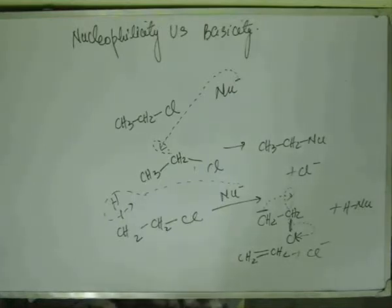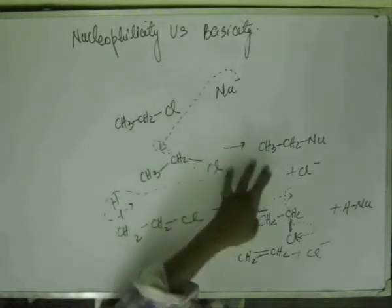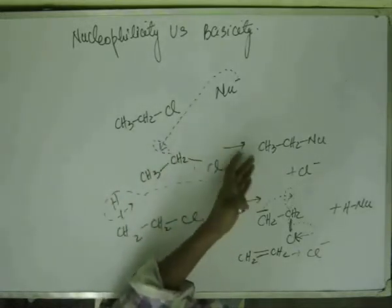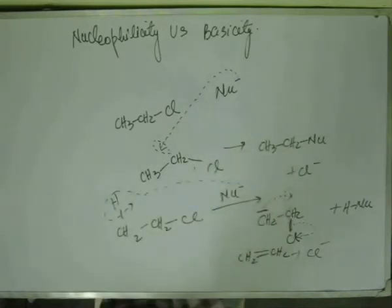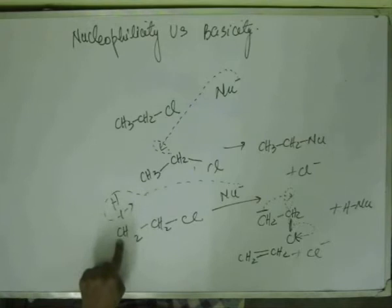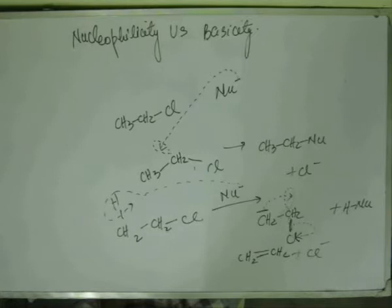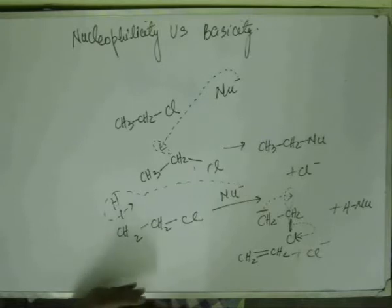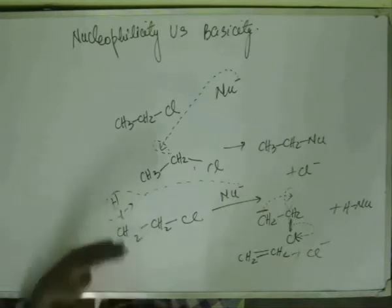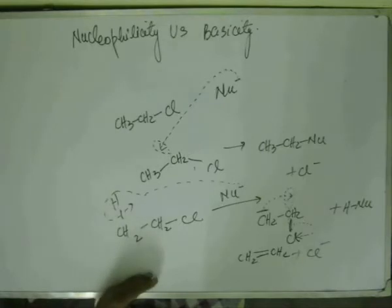There are various things that we have to talk about here. The first thing is the product of elimination is an unsaturated hydrocarbon — an alkene. The product of a substitution reaction was a normal alkyl group attached with the nucleophile. Now, the orientation of chlorine and hydrogen will be very important. We will come to orientation in a moment, but before that, let's talk about the situations that will encourage substitution and the situations that will encourage elimination.